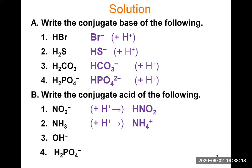For OH-, what is the conjugate acid? Add an H+ to it. OH- plus H+ gives two hydrogens and one oxygen, and the positive charge cancels the negative charge. Two hydrogens and one oxygen is actually water, written as H2O. So here again you would not place the H first in the formula — you should recognize that two hydrogens and one oxygen is water.